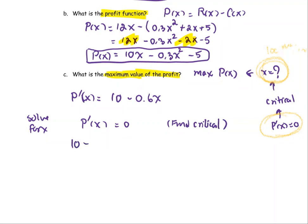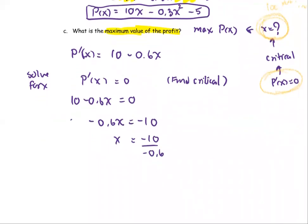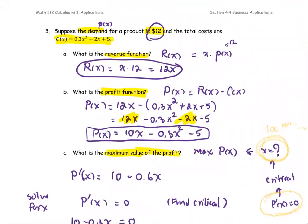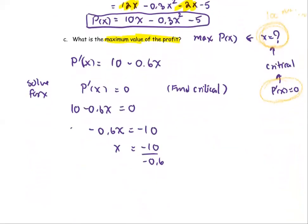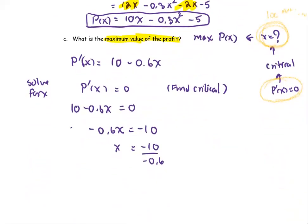Taking the derivative: P'(x) = 10 − 0.6x. Set P'(x) = 0 and solve for x: subtract 10 from both sides to get −0.6x = −10, so x = −10 ÷ (−0.6) = 100/6 = 50/3, which is approximately 16.667. This is our critical value.